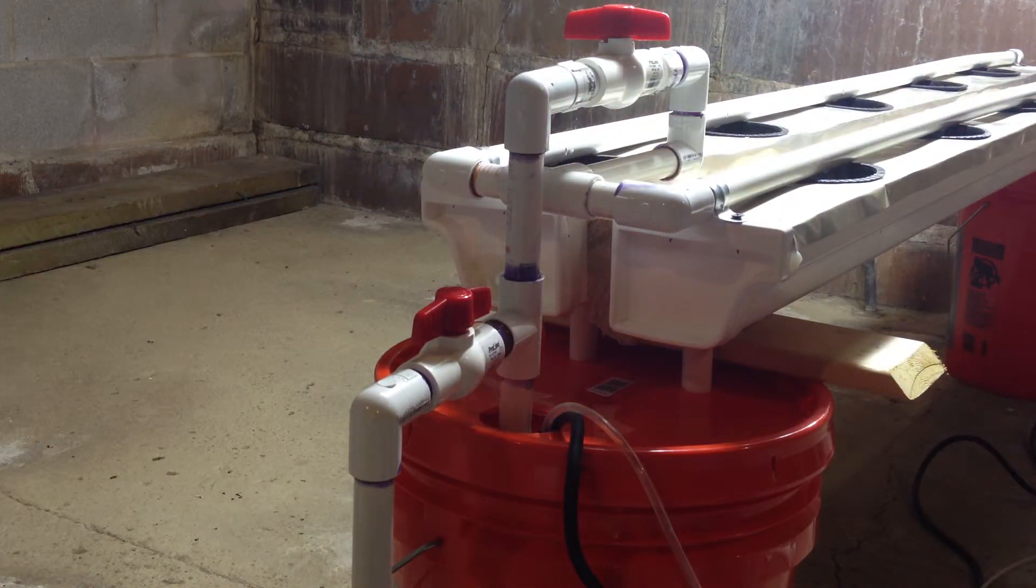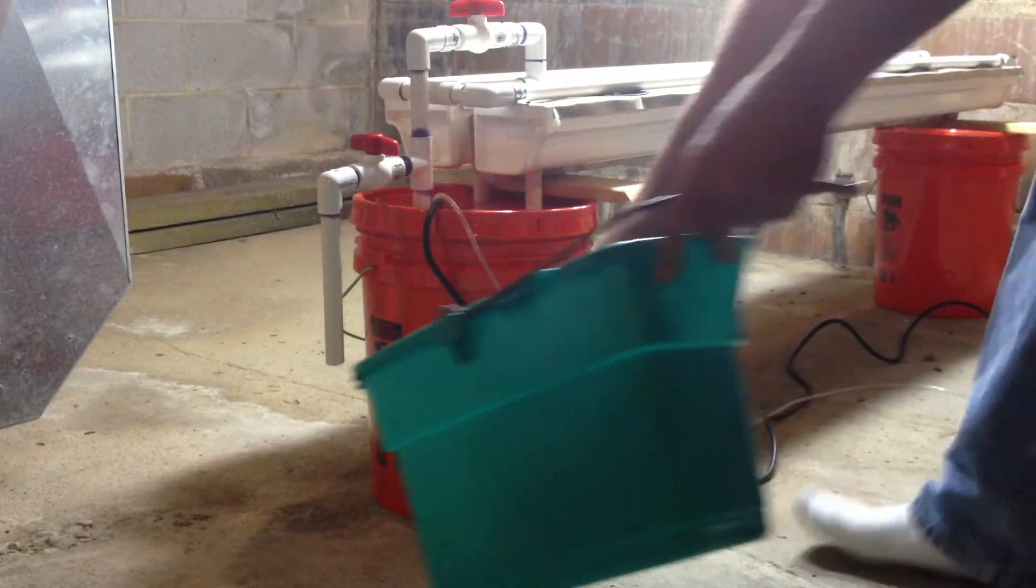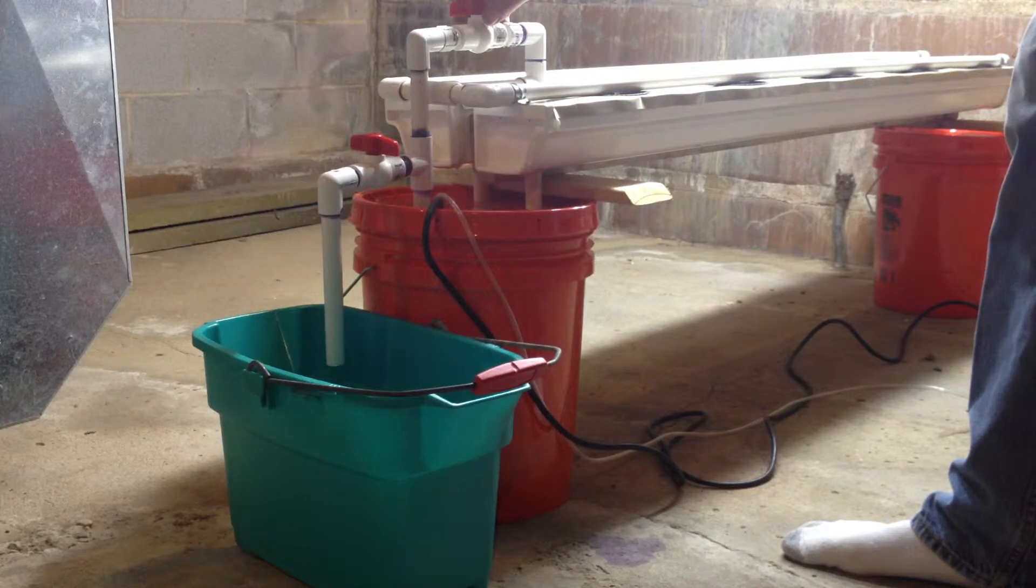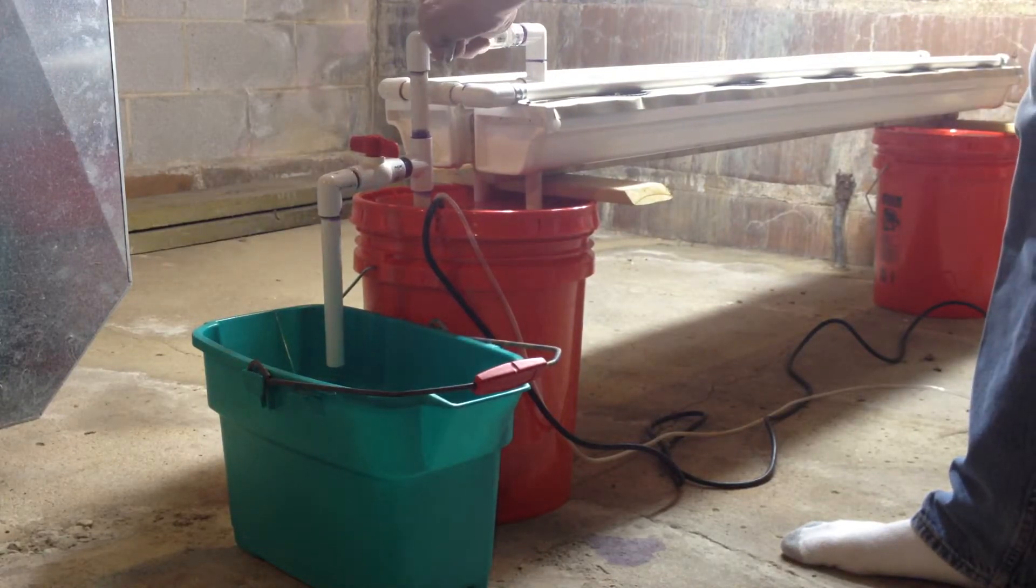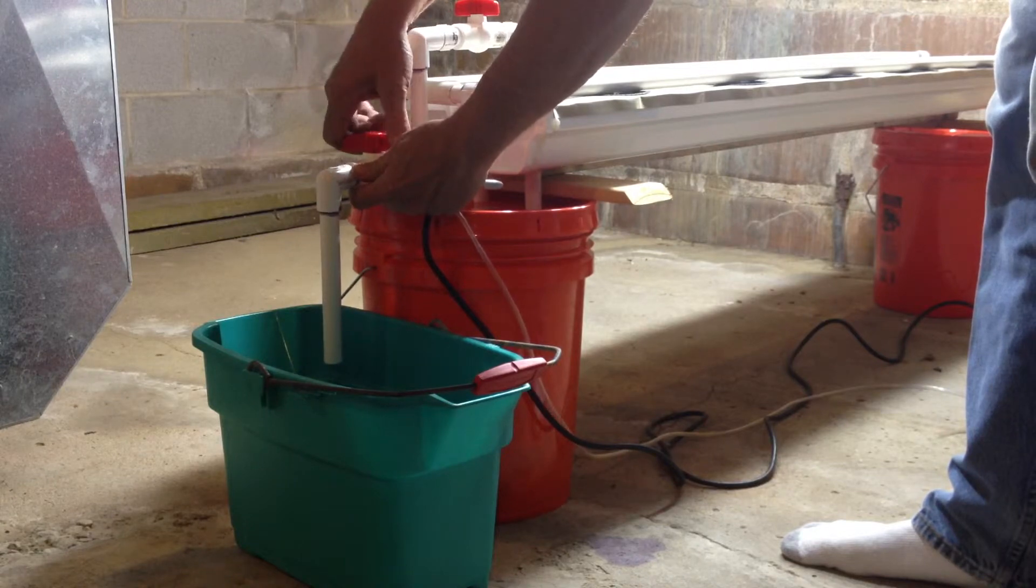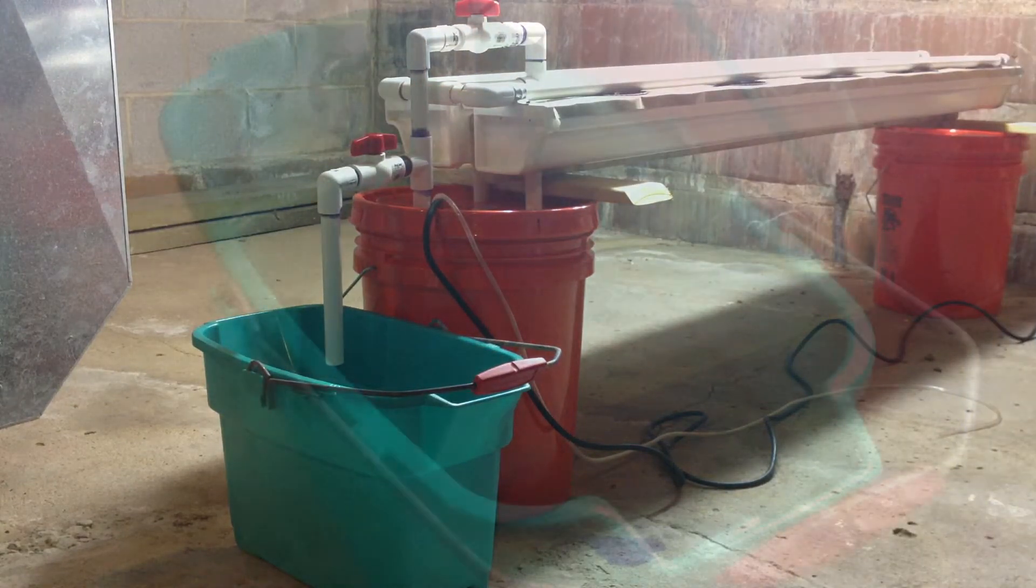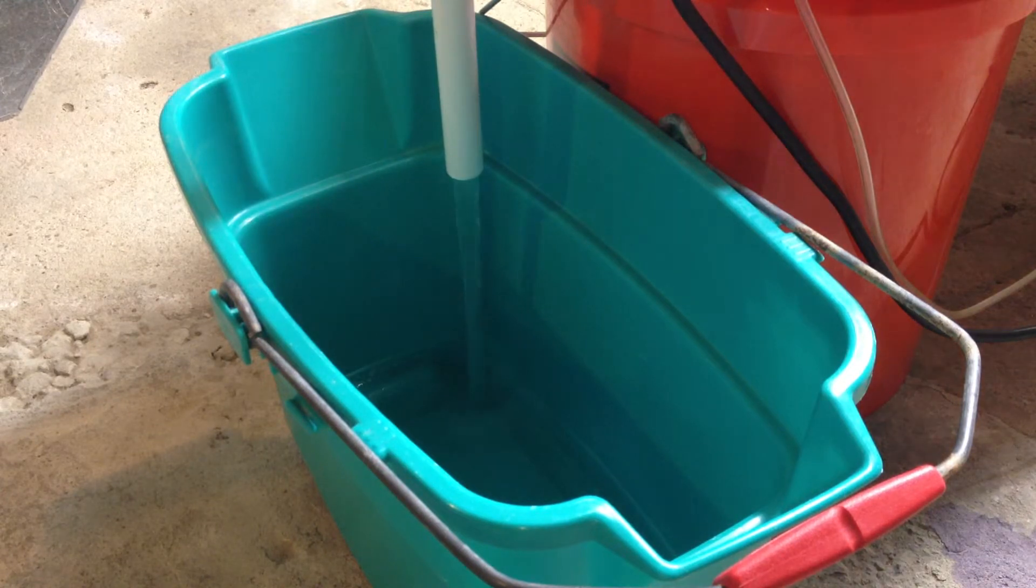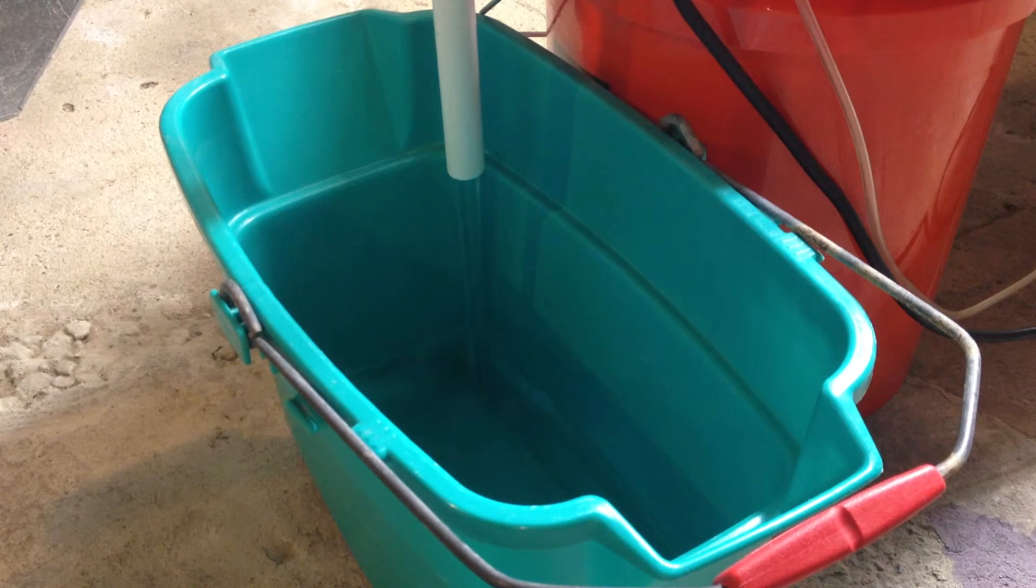After we've allowed everything to dry, we're going to do a test on it. Put a bucket underneath here, turn off the main valve on top which goes to the drip tubes, and we're going to open up the drain and flip on the power to the pump. In about 20 seconds it empties the reservoir.